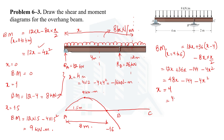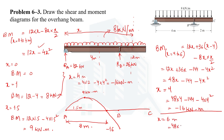At x = 6 m (point C), using M = 48x − 144 − 4x²: M = 288 − 144 − 144 = 0. So the bending moment returns to zero at the free end C, as expected. The variation again follows a second-degree (quadratic) curve in this portion.